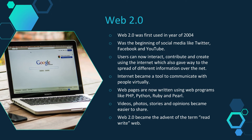Next is Web 2.0. In 2004, the term Web 2.0 was first used. It was the birth of social media platforms such as Twitter, Facebook, and YouTube. Users can now interact, contribute, and create using the internet, which has also facilitated the spread of various types of information. The internet evolved into a tool for communicating with people virtually. Web pages are now created using web programming languages such as PHP, Python, Ruby, and Perl.